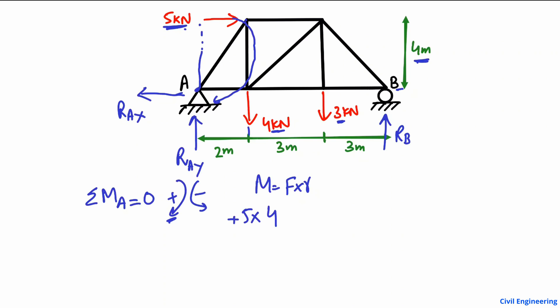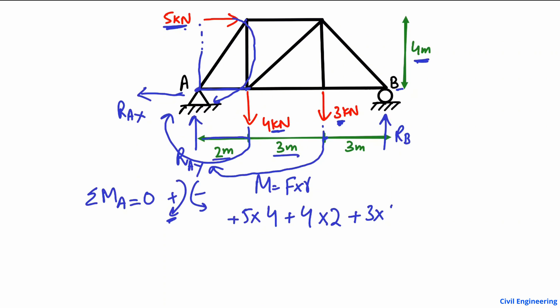The 4 kN load also produces a clockwise moment about point A, so again it is positive: 4 kN multiplied by its moment arm, which is 2 meters. Then the 3 kN load acting downward also creates a clockwise moment about point A: 3 kN multiplied by its moment arm, which is 3 plus 2, that is 5 meters.